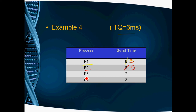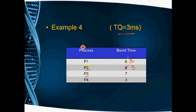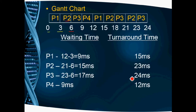Next in FCFS order we go to P3. P3 starts executing at 6 milliseconds. P3's total burst time is 7, so after 3 milliseconds execute, the balance is 4 milliseconds remaining. P3 executes from 6 to 9 milliseconds.